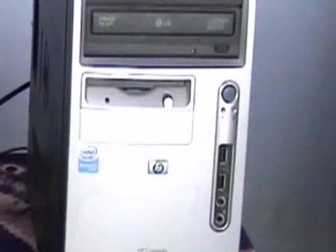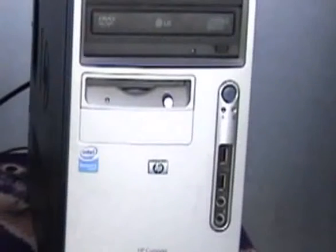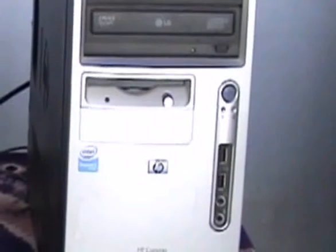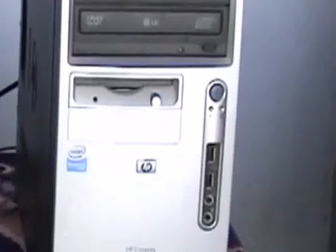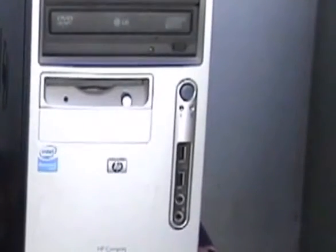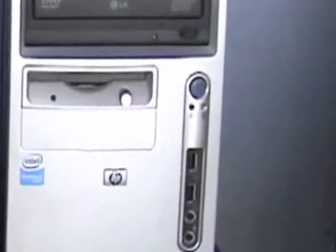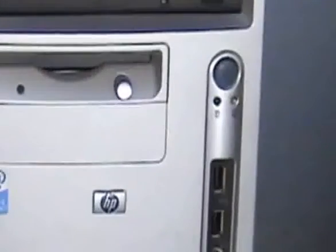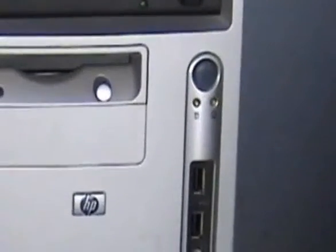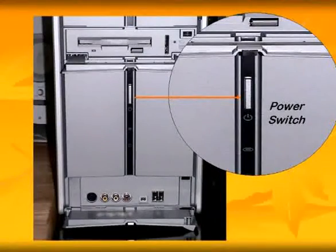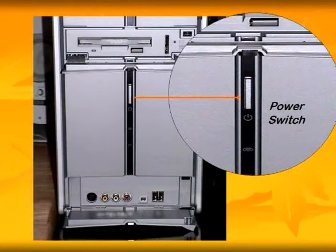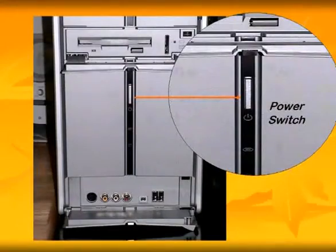Next, switch on the computer itself. The front panel has a number of buttons located in different positions, but the power button is usually the largest and most prominently placed. It is sometimes marked with a light bulb image to indicate it is the power button.